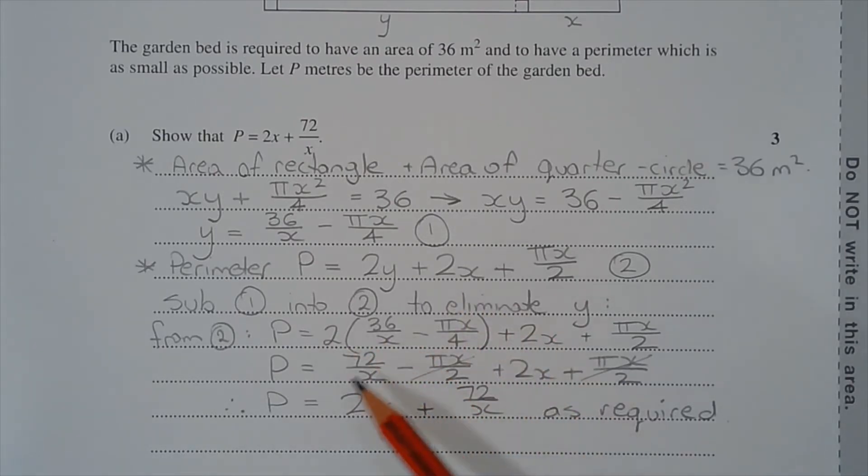And of course you'll get some cancellation there and there, and therefore p is equal to 2x plus 72 over x as required.